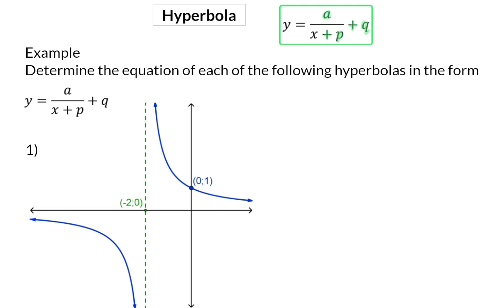Example: determine the equation of each of the following hyperbolas in the form y is equal to a over x plus p plus q. Just like when drawing a hyperbola, here we also start by looking at the asymptotes.